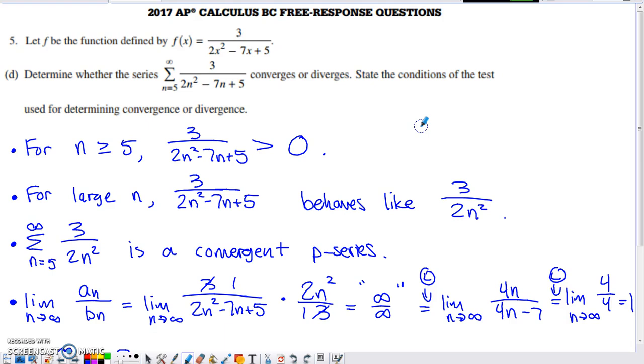I'm just so used to, when I see a polynomial over a polynomial, just instantly going to a comparison test. And to use a comparison test, you do need to make sure that the terms of your series are positive. The terms of this series are positive for the values of the index, the values of n that we're going to consider. That gives me the green light to try to use a comparison test.